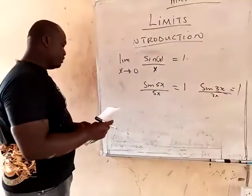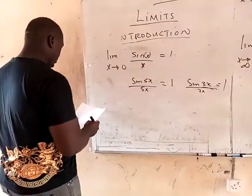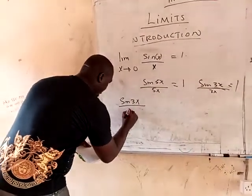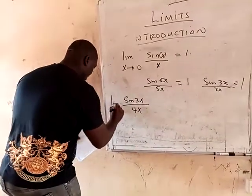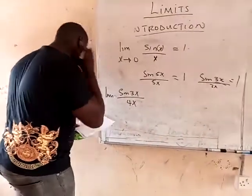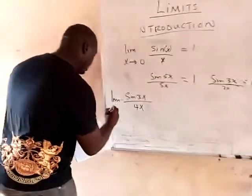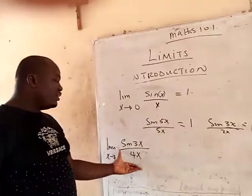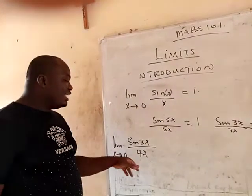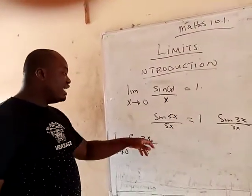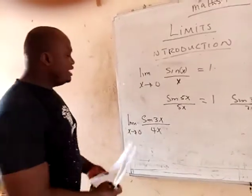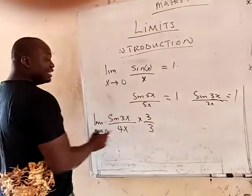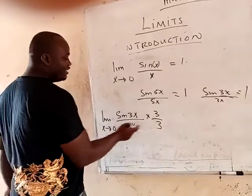Now, if I give you a limit of sine 3x divided by 4x, with the limit as x approaches 0, here is what you're going to do. Think about what number you would multiply so that you have 3x in the denominator matching the 3x inside sine. The simplest thing you can do is multiply everything by 3 over 3, because 3 over 3 is 1, and anything times 1 is still 1.